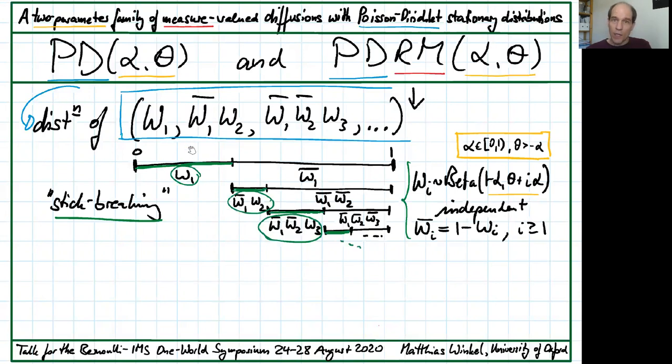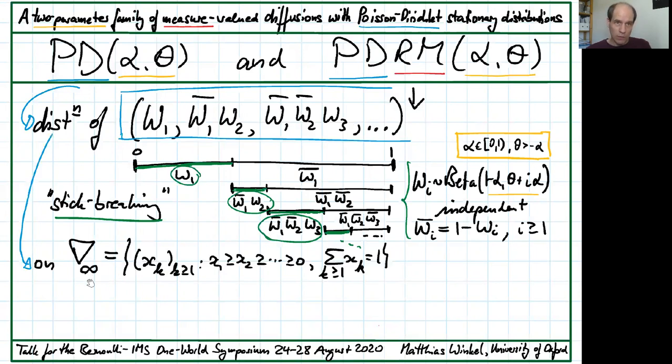We end up with a random sequence. Its distribution on the space of decreasing sequences that sum to 1 is called Poisson-Dirichlet alpha-theta. The two parameters appear in the beta variables. But the stick-breaking sequence itself is not decreasing. We rank it into decreasing order.